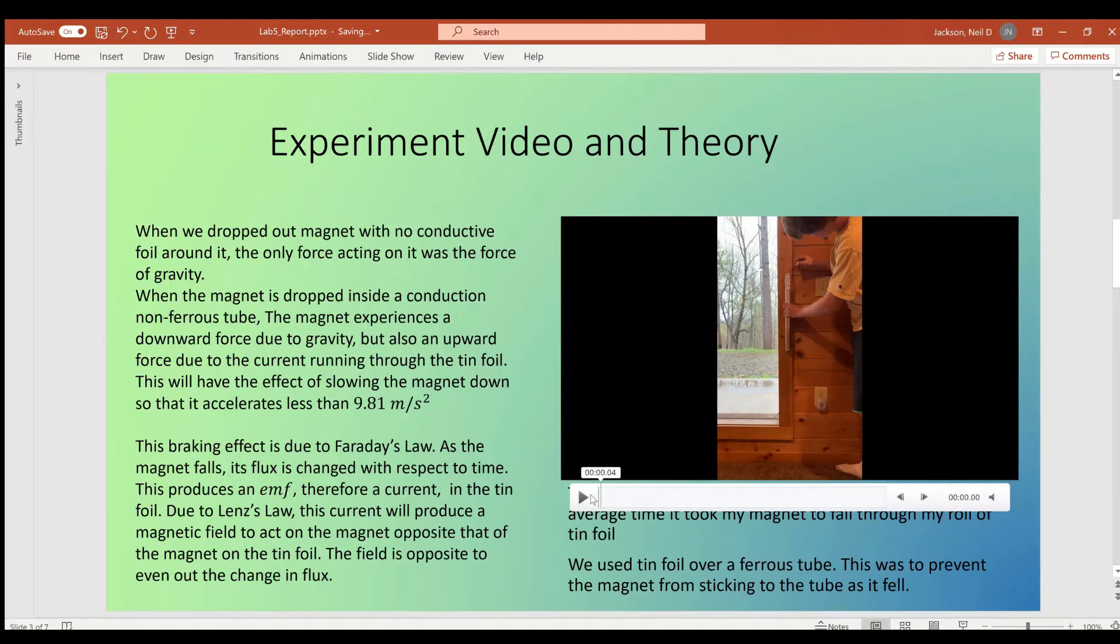For the experiment on the right here, I have this video detailing one of my attempts. We use this tinfoil tube over a ferrous tube to prevent the magnet from sticking to the tube, as ferrous means magnetic. When we drop the magnet through a conductive tube, this tube of tinfoil.